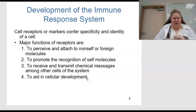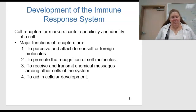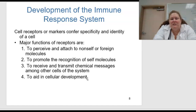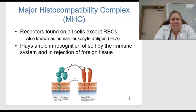When we have the development of the immune response system, cell receptors or markers confer specificity and identity of a cell. There are major functions of receptors: to perceive and attach to non-self or foreign molecules, to promote recognition of self molecules, and to receive and transmit chemical messages among other cells of the system. Together these aid in cellular development.